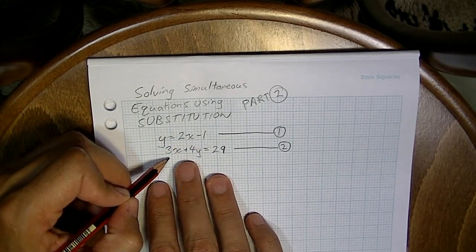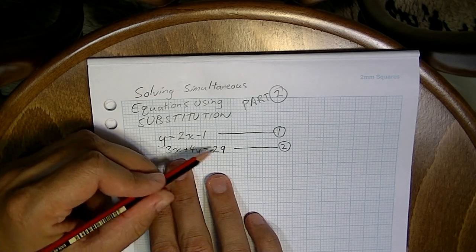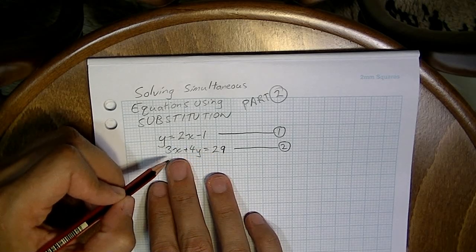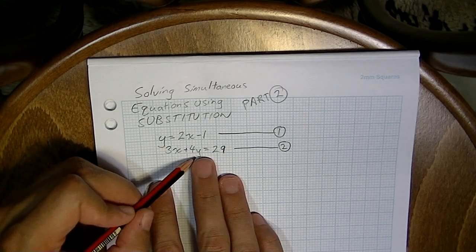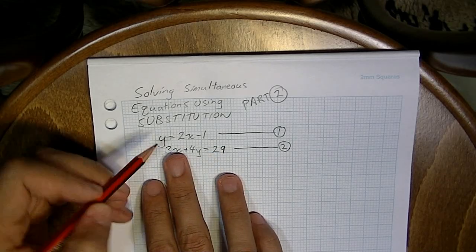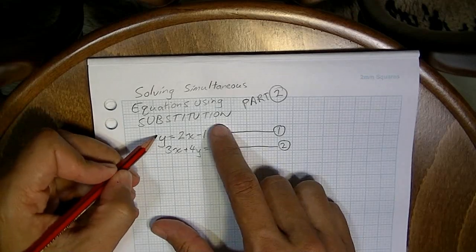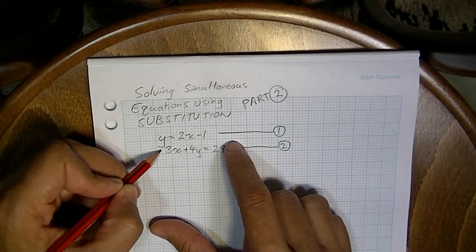Equation number two is more complicated because we don't know what x is equal to here. We could rearrange it if we wanted to know what x was equal to. And we don't know what y is equal to. So because we've got y as the subject here, it's a good idea to sub that, sub equation one, into equation two.